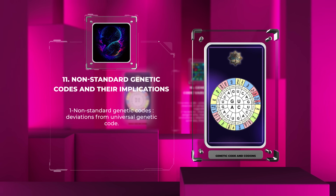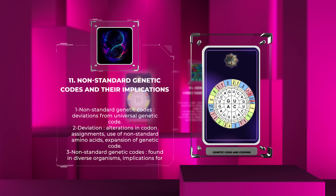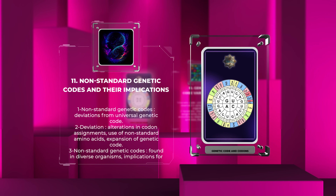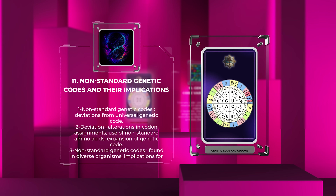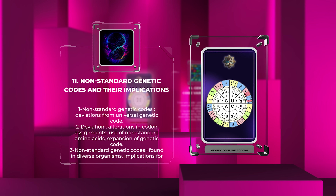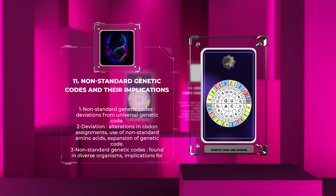Non-standard genetic codes refer to genetic codes that deviate significantly from the universal genetic code. These deviations can include alterations in codon assignments, the use of non-standard amino acids, and the expansion of the genetic code to include additional codons and amino acids. These non-standard genetic codes are found in diverse organisms, ranging from bacteria and archaea to certain mitochondria and single-celled organisms, with significant implications for protein synthesis, cellular processes, and evolutionary relationships. Understanding non-standard genetic codes provides valuable insights into the complexity and adaptability of life on Earth.